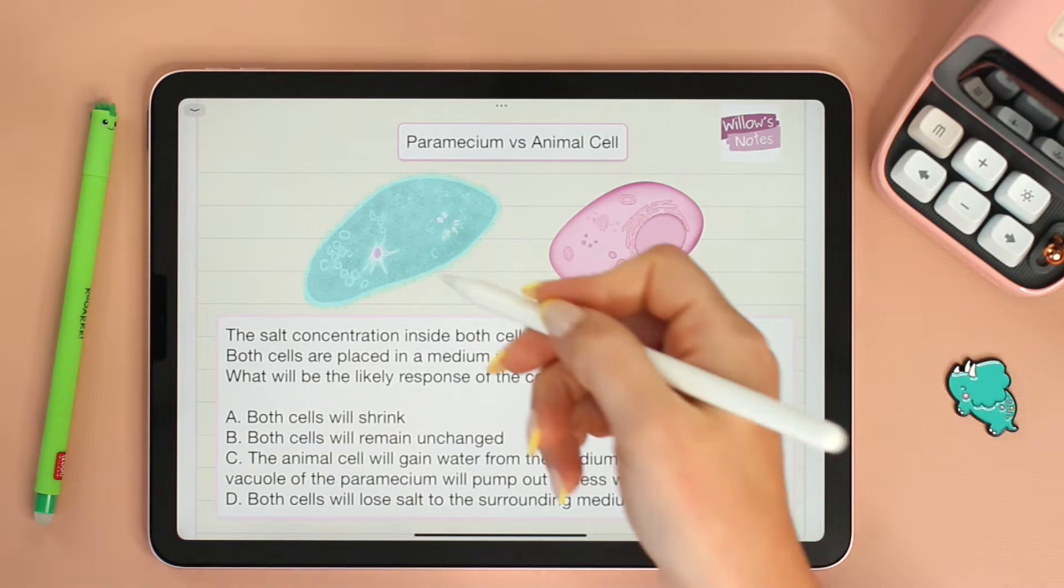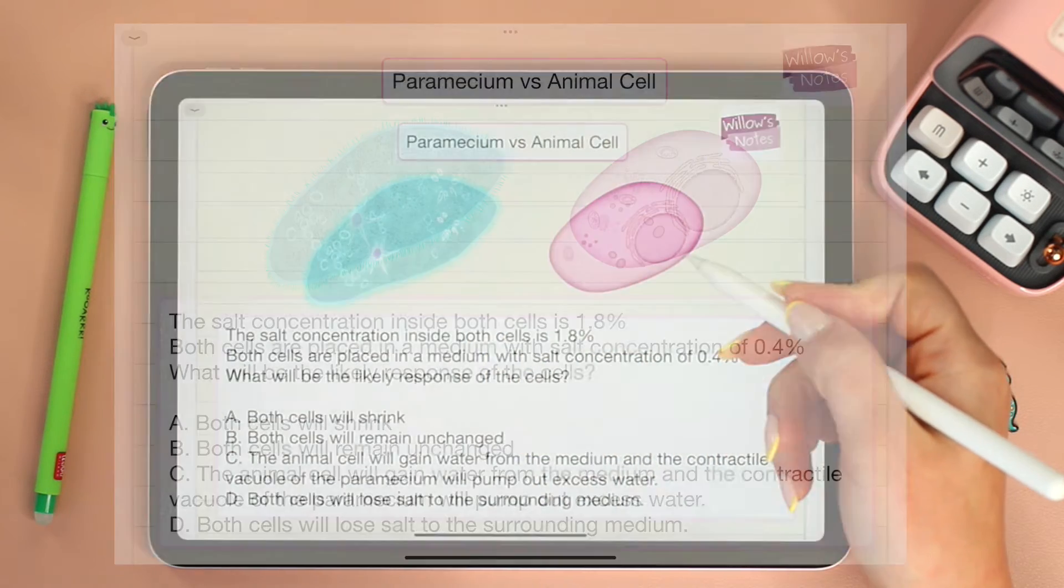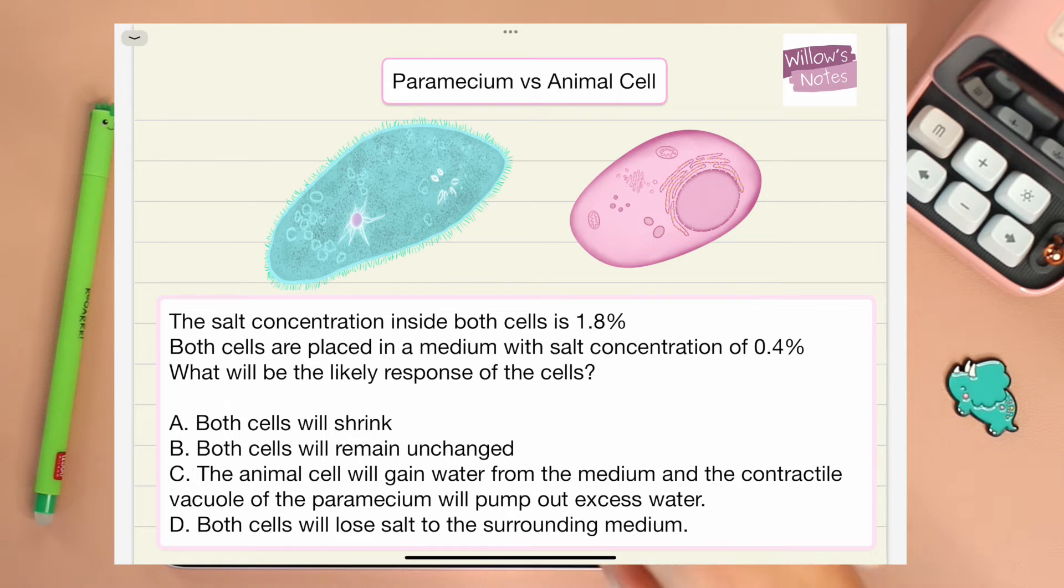We have two types of cells, a paramecium and an animal cell, and the question asks us to see the effect of having a specific type of solution on these cells. So pause the video, read the question, and then hit play so that we go over the question together.